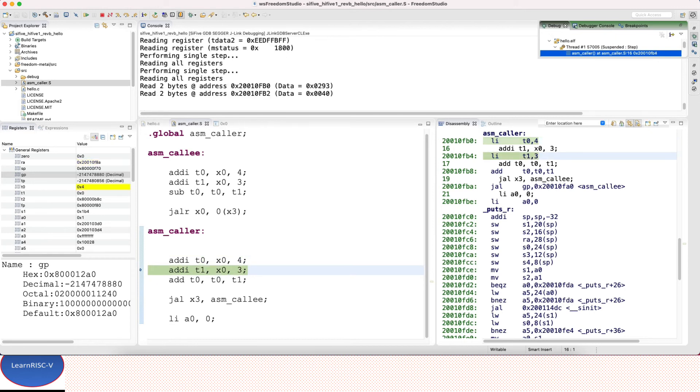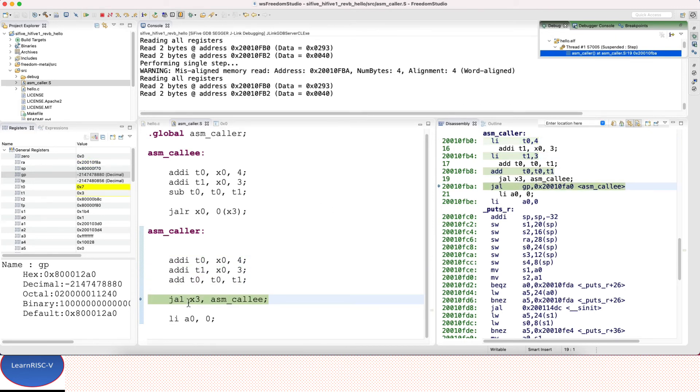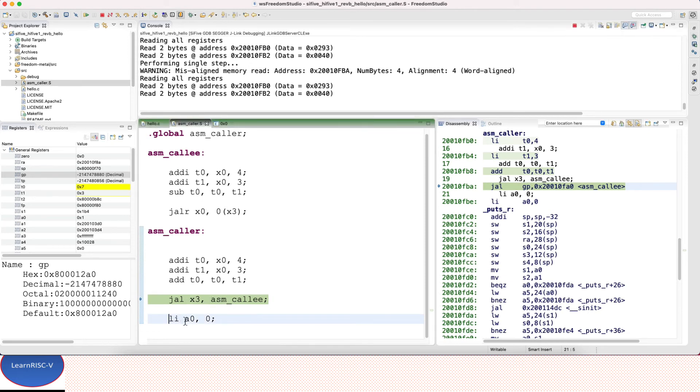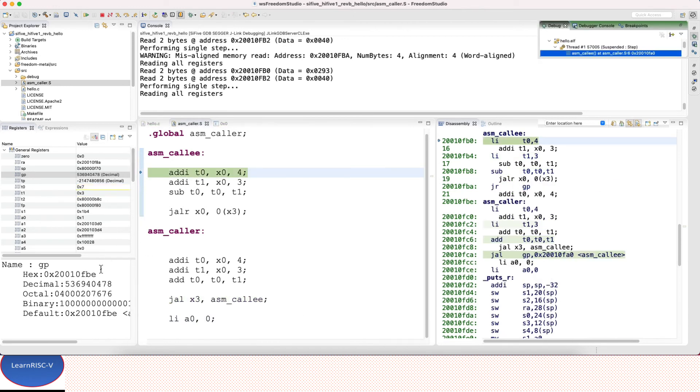After the execution of this instruction, x3 should have the address of the next instruction. Let me open this disassembly here. 2001FBE, this should be the address in x3 here after this. Let me check. FBE, okay. So the return address is stored in x3, then execution jumps into callee.